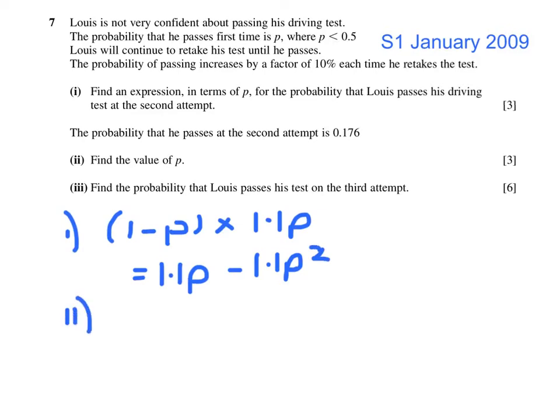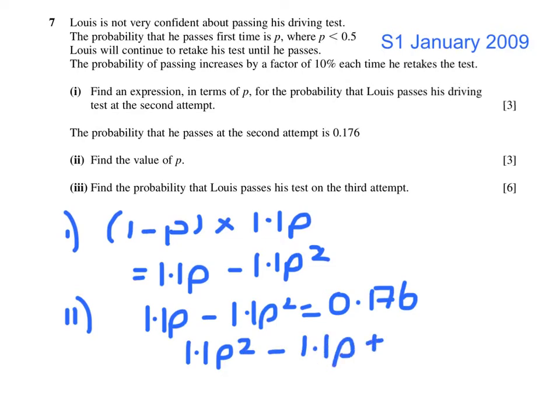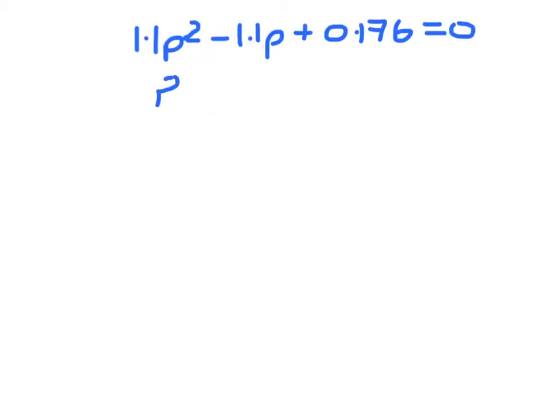From the information given in part 2, we can see that 1.1p minus 1.1p squared equals 0.176. So 1.1p squared minus 1.1p plus 0.176 has to equal 0. Dividing through by 1.1, p squared minus p plus 0.16 has to equal 0.